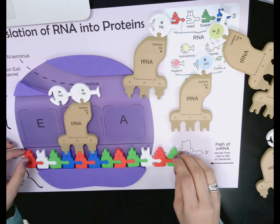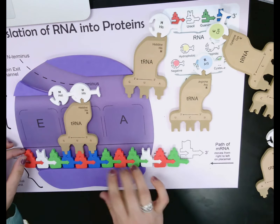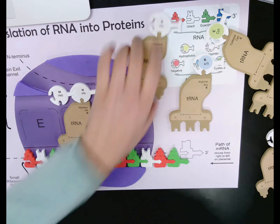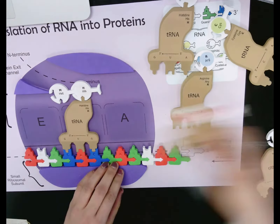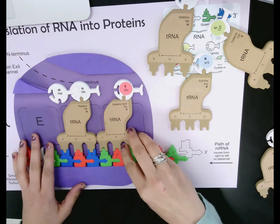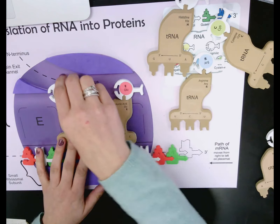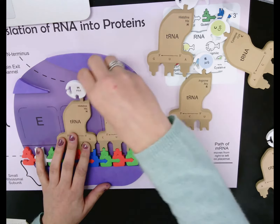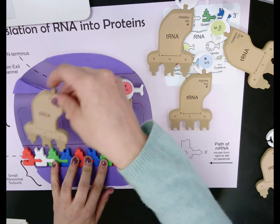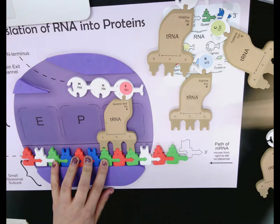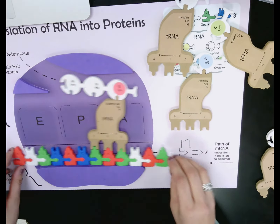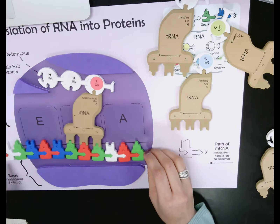As we move on, we have the codon GAG, so the anticodon would be CUC. Glutamine. Same deal — we hit this portion of the ribosome, the rRNA, and plug it into the amino acid chain, elongating the protein. The tRNA goes out into the cytoplasm to look for more amino acids. You can see that our protein is now forming.